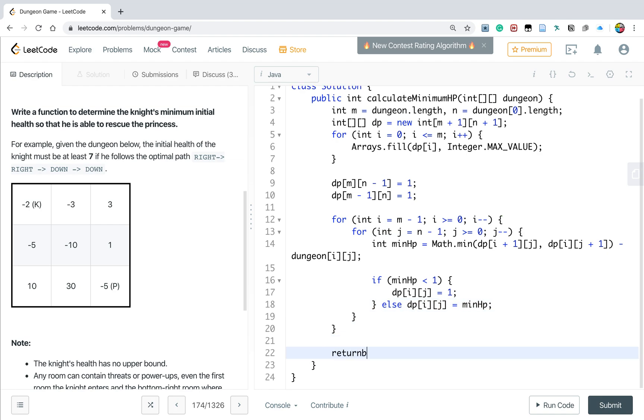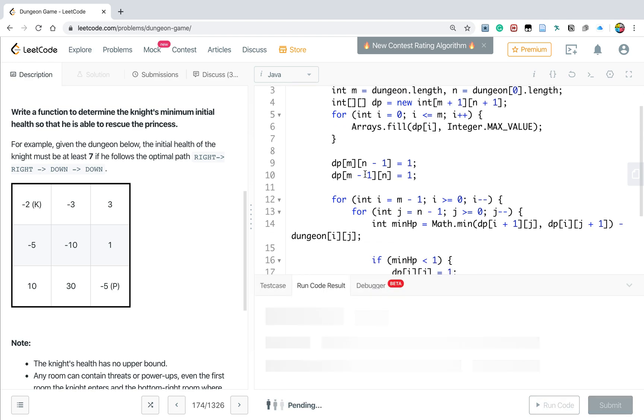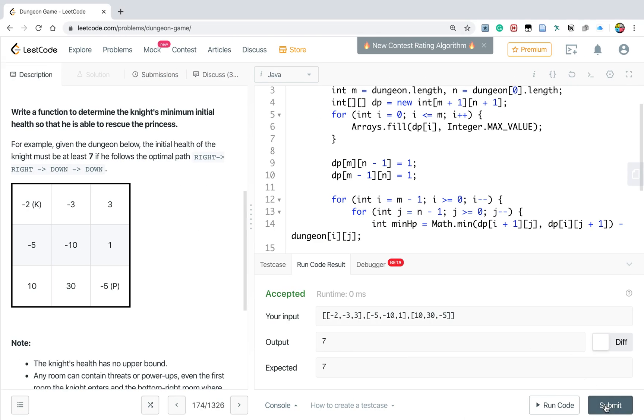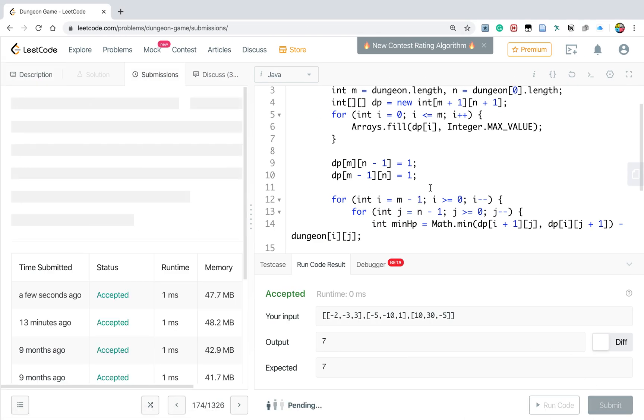So finally we return dp[0][0]. This place is, these are two places. It's the last row, and this is the last column. Okay, thank you for watching. See you next time.